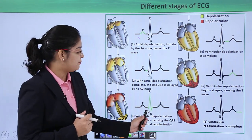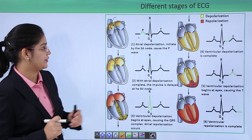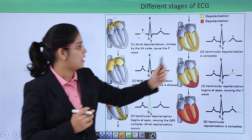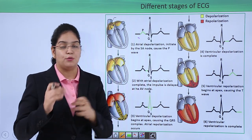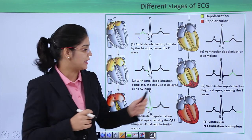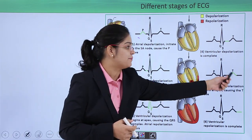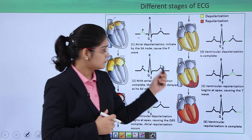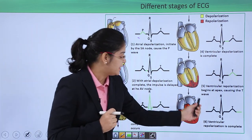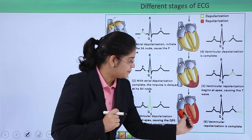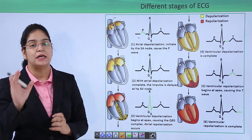From the QRS complex, the impulse goes to T. T is the relaxation phase of the ventricle, so after full contraction of the ventricle, the impulse moves toward relaxation. When the AV node transfers its impulse to the bundle of His and Purkinje fibers, after full contraction, relaxation starts. The graph represents point T — the relaxation phase. After full relaxation is completed, it comes back to the P point again, completing a full cardiac cycle.